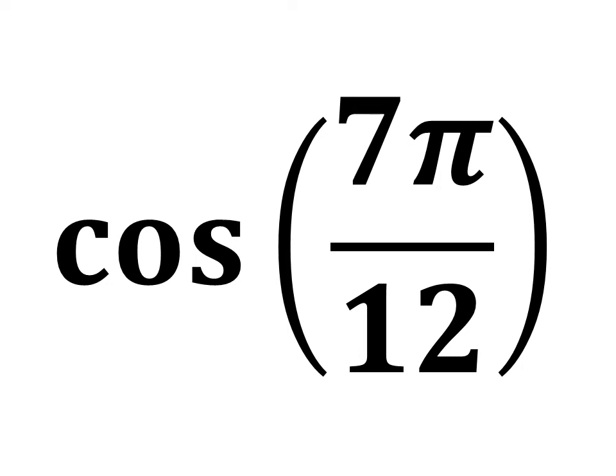In this video, we will learn to find the value of cosine of 7 times pi upon 12.